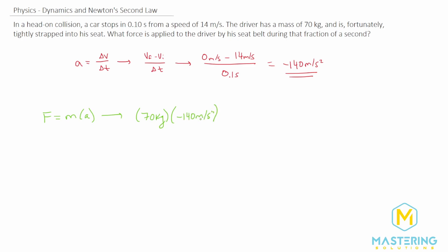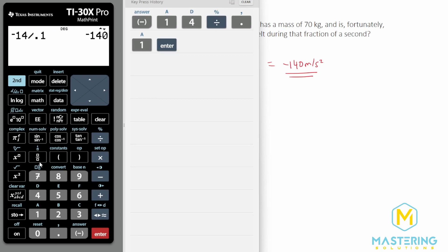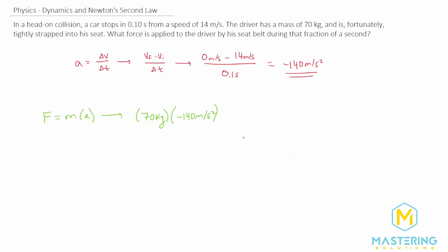A kilogram times meter per second squared is the same thing as a newton. So we have 70 times negative 140. We'll just hit answer, gives us negative 9,800 newtons.